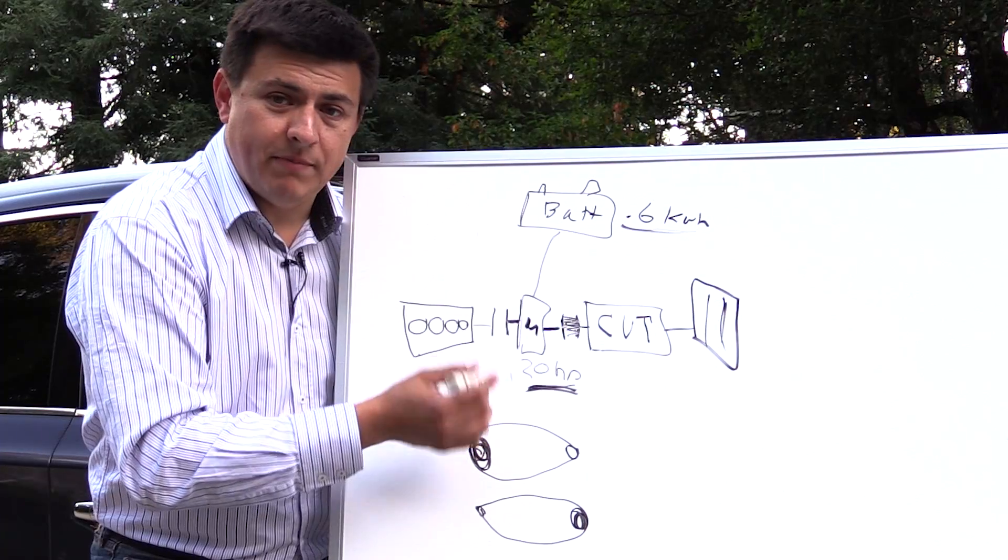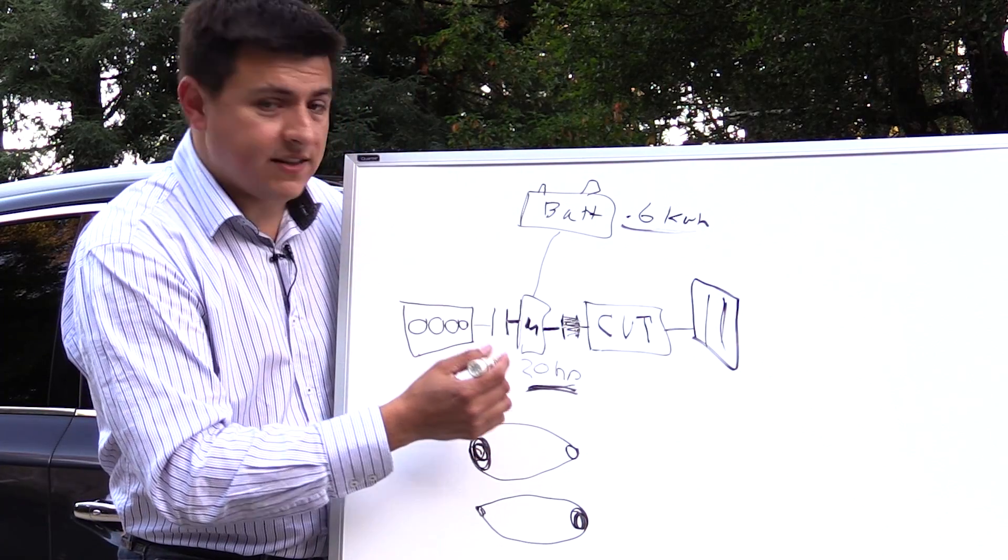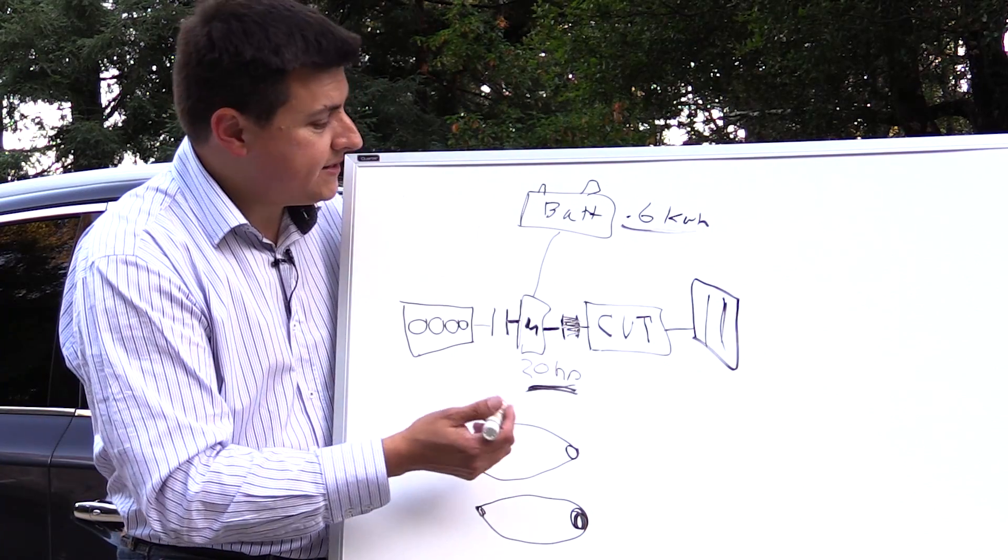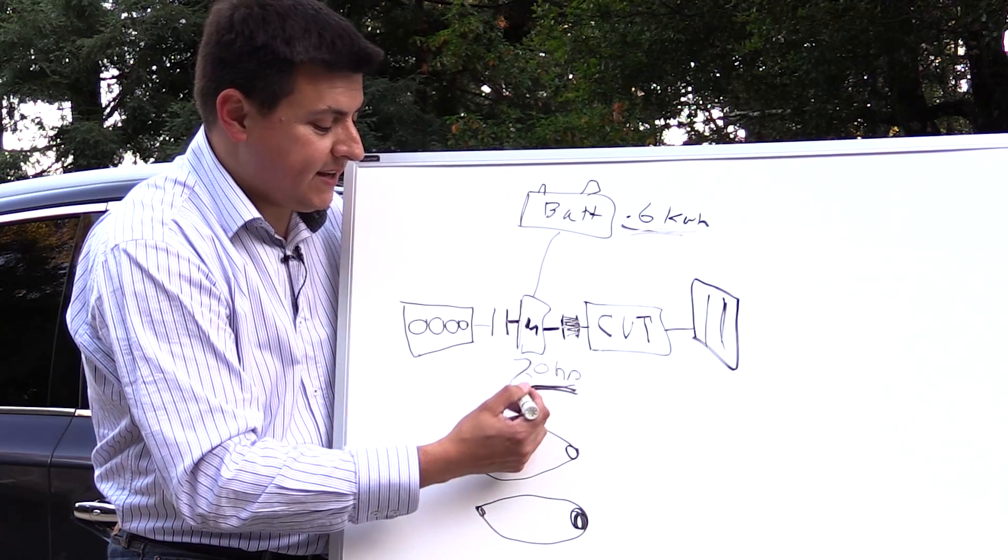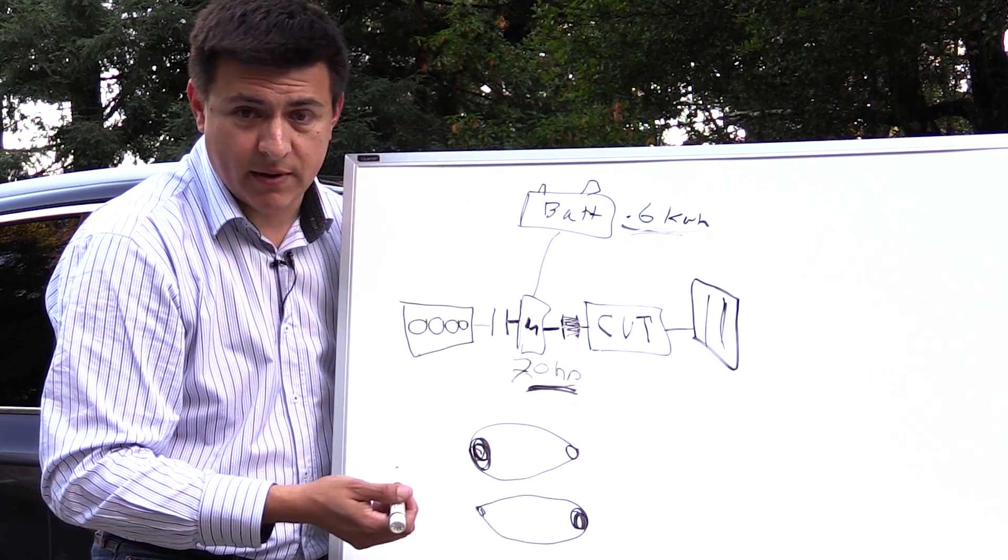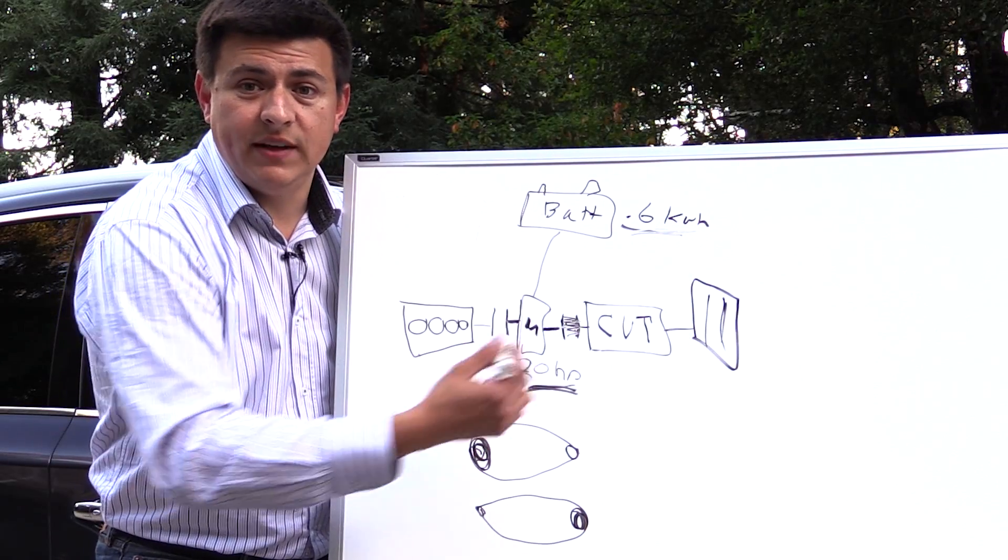Now this is also what's very different about the system in the QX60 versus the Q50 and Q70 sedans because in the Q70 and Q50 sedans this battery is much bigger and this motor is about 70 horsepower not 20 horsepower and that's why they can drive electric only much further.